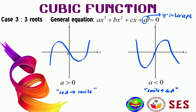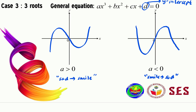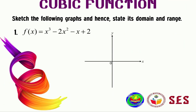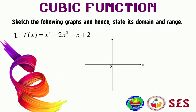The first question: sketch the graph of f(x) = x³ - 2x² - x + 2. When we factorize this cubic function, we get (x - 2)(x + 1)(x - 1). This means we have three x-intercepts for this case.